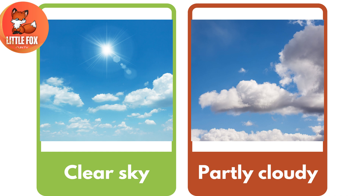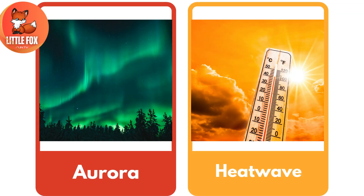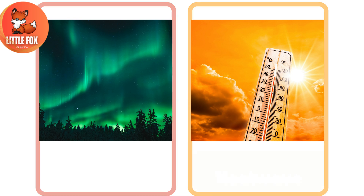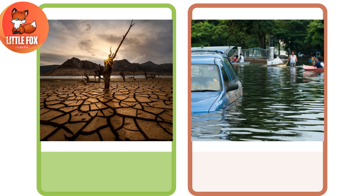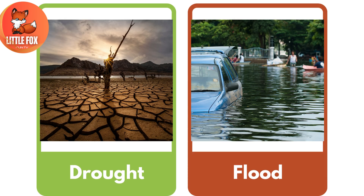Number 21: Clear Sky. Number 22: Partly Cloudy. Number 23: Aurora. Number 24: Heat Wave. Number 25: Drought.